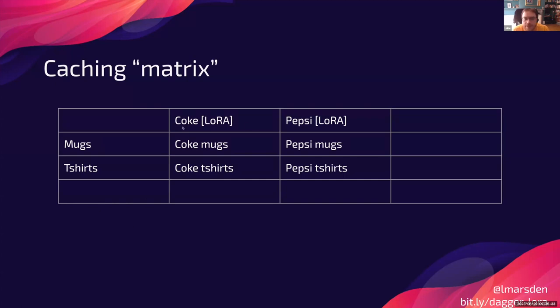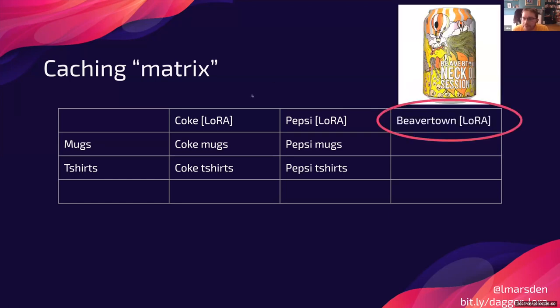And if you were building this yourself, then you'd have to write like some caching code to make sure that you don't rerun the things that you've already run. But Dagger just does that automatically for you. So I thought that was really powerful. And in particular, I had this idea of the caching matrix.